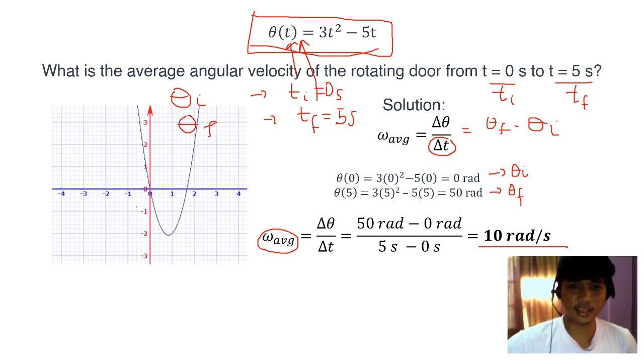I was curious about the graph of 3t squared minus 5t, so I used an equation grapher online, and it looks like a parabola. Don't mind the left side of the y-axis because they represent values of omega for negative times, and at least in classical physics, there's no such thing as negative time.